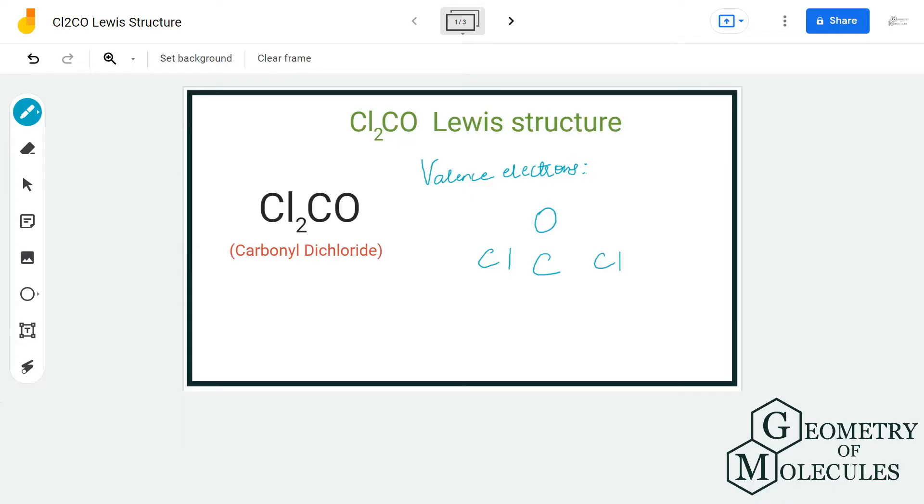Hi guys, welcome back to our channel. In today's video we are going to do the Lewis structure for Cl2CO molecule. It's the chemical formula for carbonyl dichloride, and to find out its Lewis structure we will first determine the total number of valence electrons for this molecule.